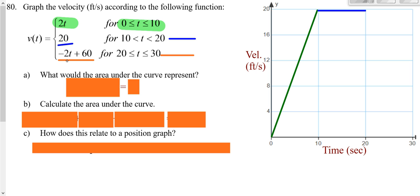...we get negative 2 times 20, which is negative 40, plus 60, giving us 20. Plugging in 30 gives 0, so we have the point (20, 20), and at 30 we're back down at 0 again.